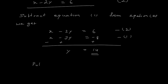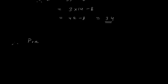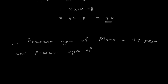Put Y equals 14 in equation 1: X minus 3Y equals minus 8. Therefore X equals 3Y minus 8, that is 3 into 14 minus 8, equals 42 minus 8 equals 34. So the present age of Maria is 34 years and the present age of her daughter is 14 years.